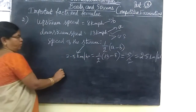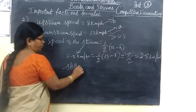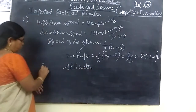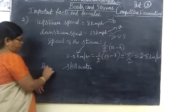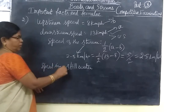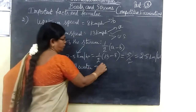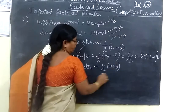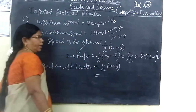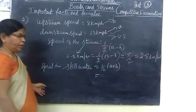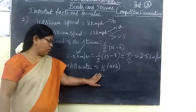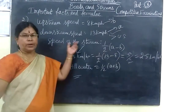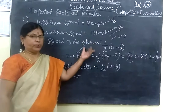Suppose still water speed is also needed — speed in still water = half bracket (A plus B). But that is not what the question is asking; it is asking only the speed of the stream, which is 2.5 km per hour. Thank you.